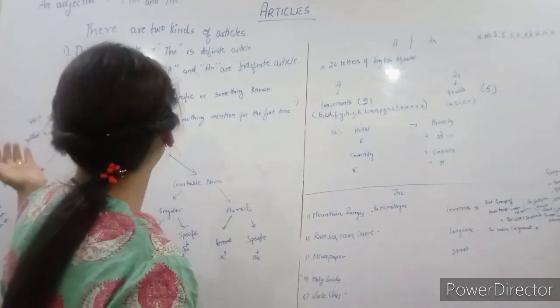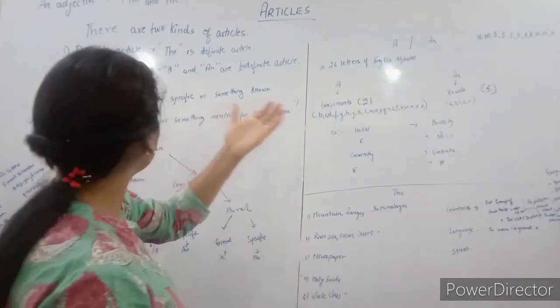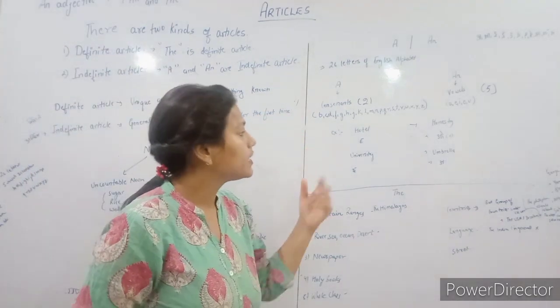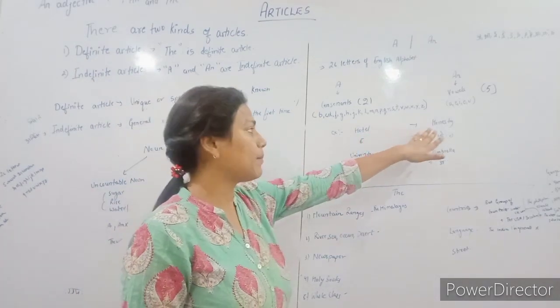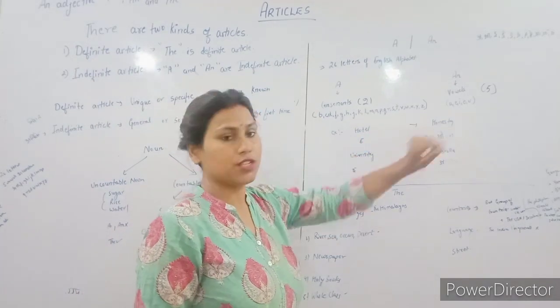For example, I have a hotel and an honesty. Hotel starts with H, and honesty also starts with H.